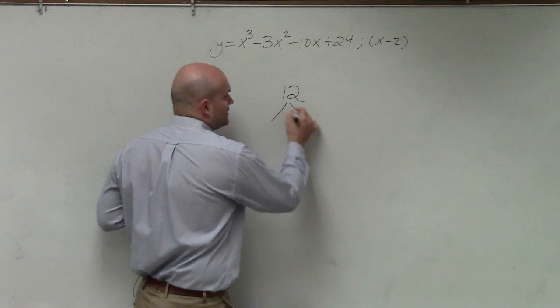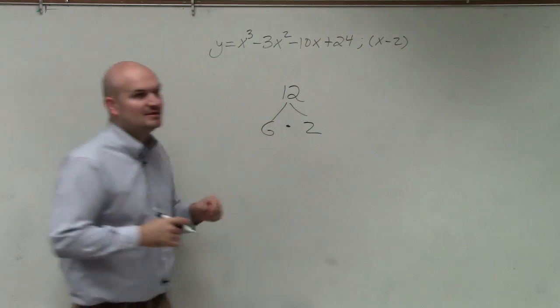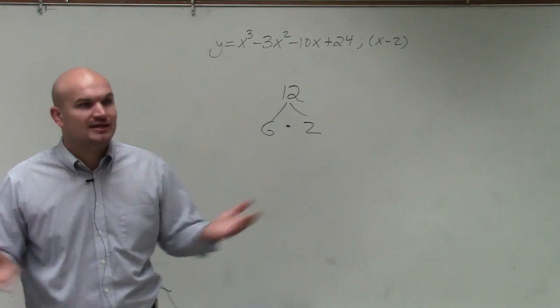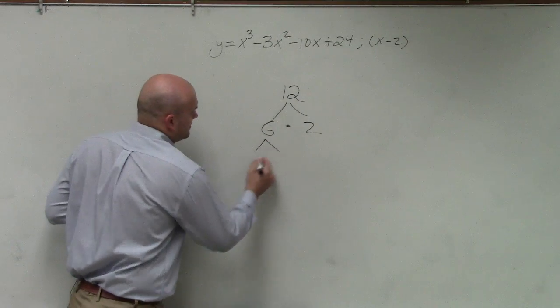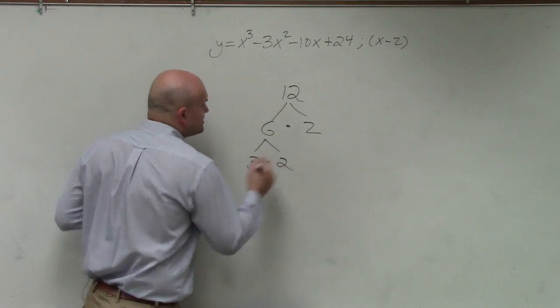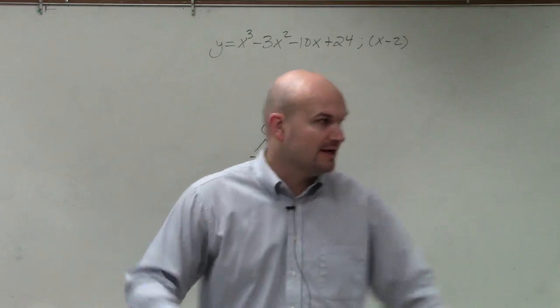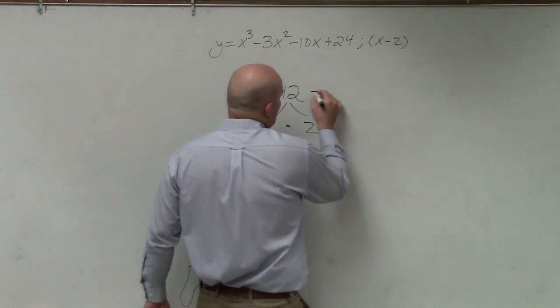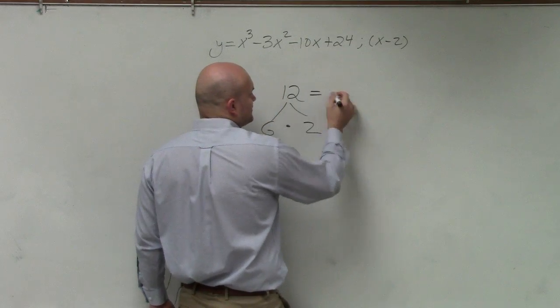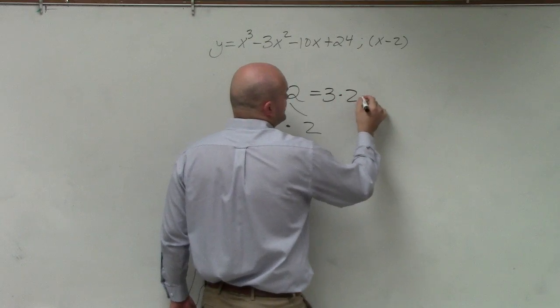And to do that, we did the little factor tree. You guys remember doing like little factor trees? You just kind of pick a factor, and then you keep on breaking it down. And what we do is we break a number down to its prime factors, numbers that cannot be factored any further. So the prime factorization of 12 is 3 times 2 times 2.